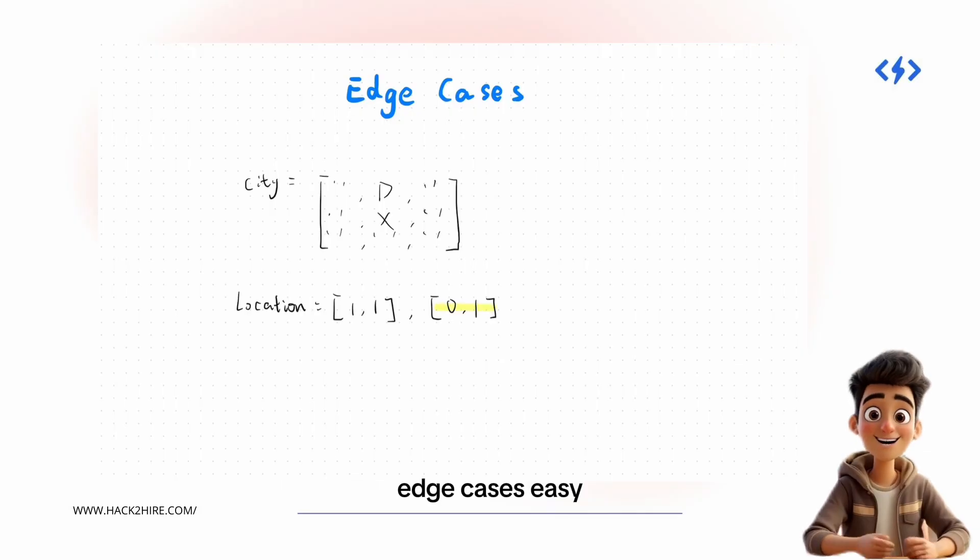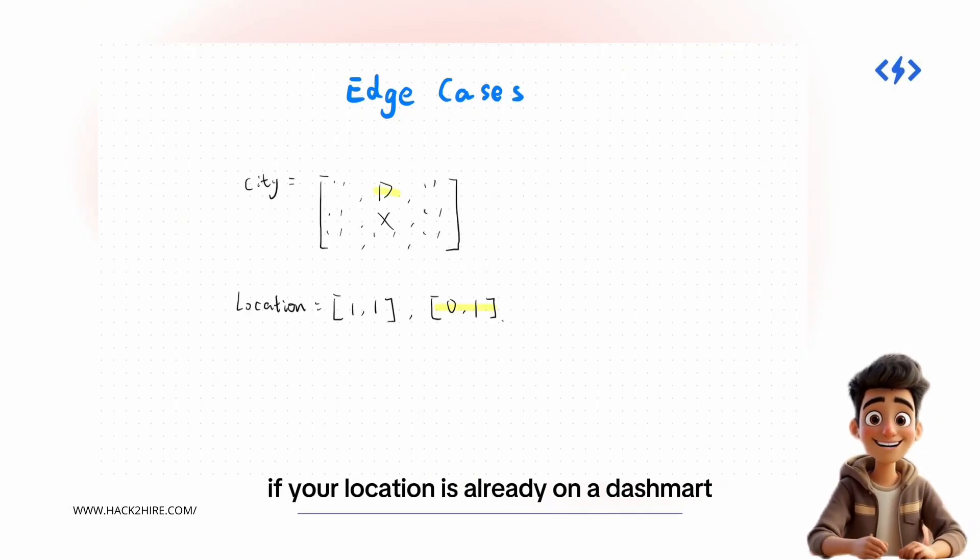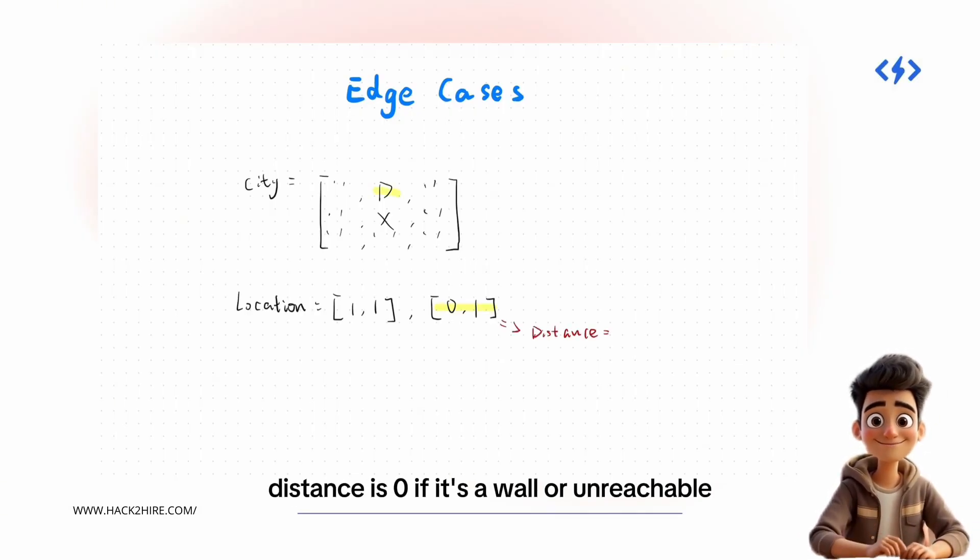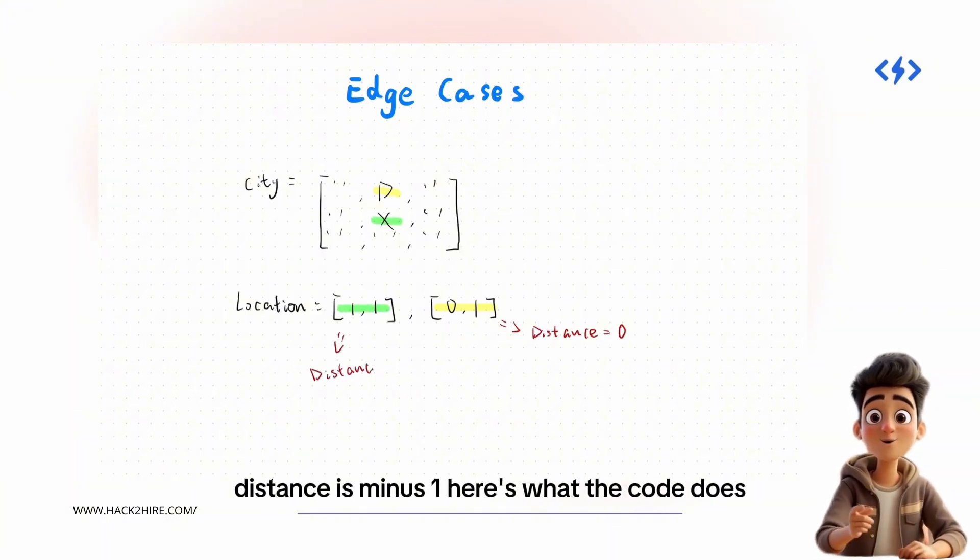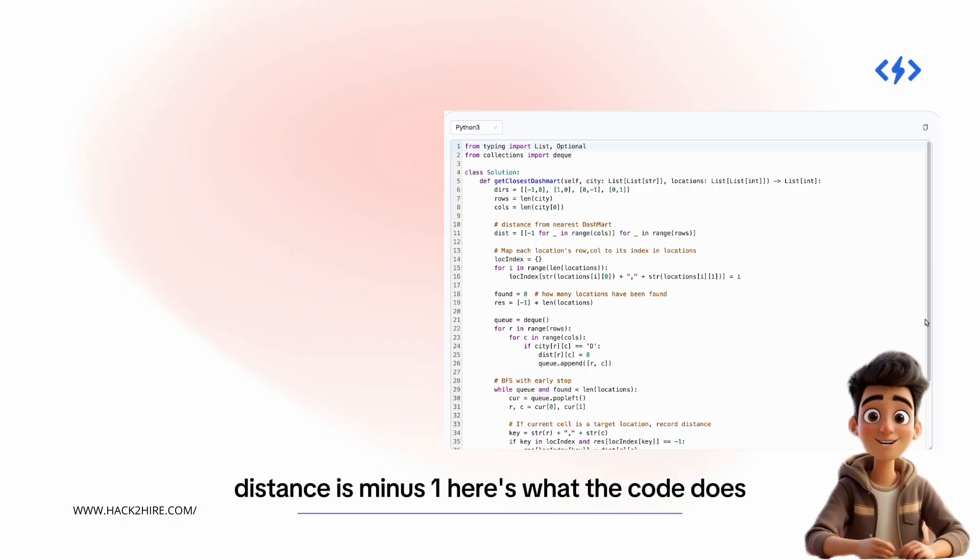Edge cases? Easy. If your location is already on a dashmart, distance is 0. If it's a wall or unreachable, distance is -1. Here's what the code does.